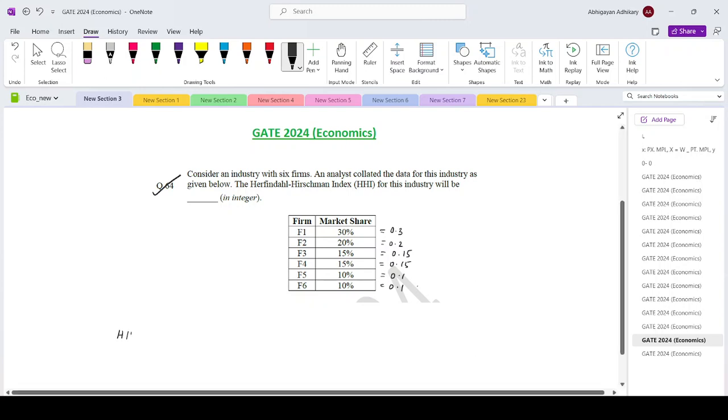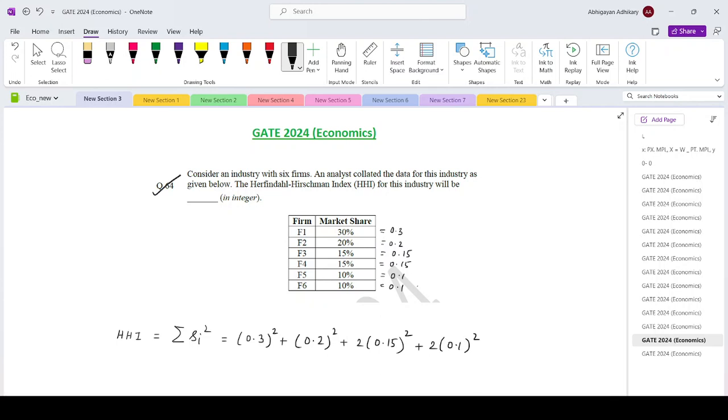So the Herfindahl-Hirschman index is nothing but sum of squared shares. So that is 0.3 whole square, 0.2 whole square, plus 2 times 0.15 whole square, plus 2 times 0.1 whole square. So if we add all these up it becomes 0.195.